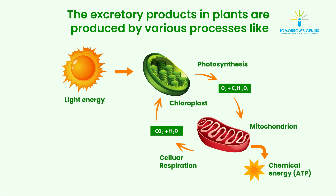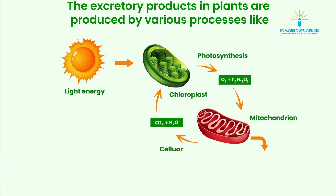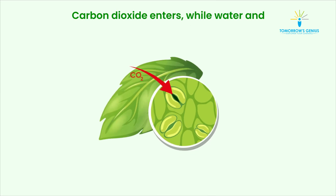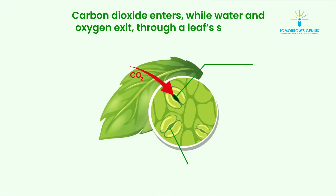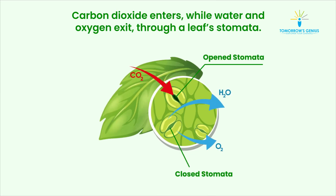Carbon dioxide, excess water produced during respiration, and nitrogenous compounds produced during protein metabolism are the major excretory products in plants. Plants produce two gaseous waste products: oxygen during photosynthesis and carbon dioxide during respiration.